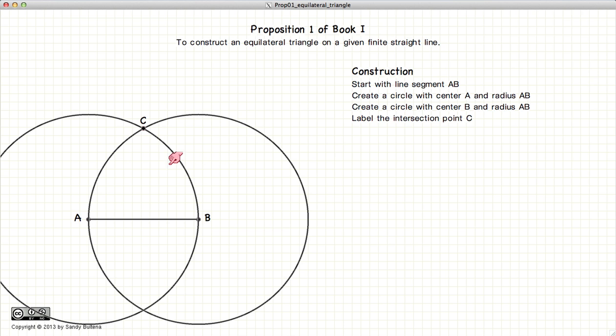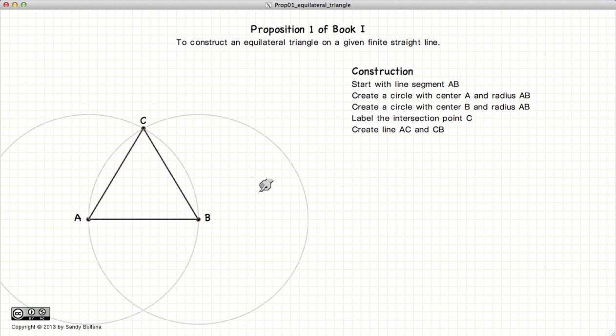Now if we draw a line from AC to CB, our resulting triangle is an equilateral triangle. But it's not sufficient that we draw the triangle. We also have to demonstrate that it is indeed an equilateral triangle.